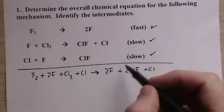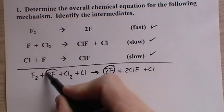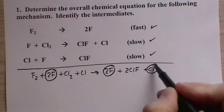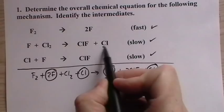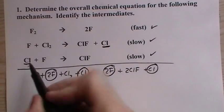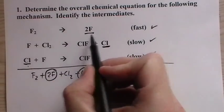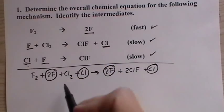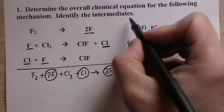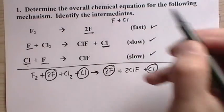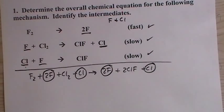Now once we've added them up, we get rid of the species that are the same on both sides. You can see that the chlorine atom is produced, and then it's used up. The fluorines are produced here, and then they're used up. Those are intermediates. The things that are cancelled are intermediates. So fluorine atom and chlorine atom are intermediates. Those are the ones that are created during the mechanism, and they disappear, or they're used up during the mechanism.